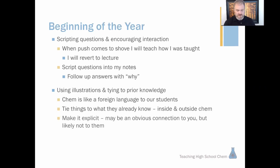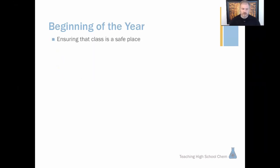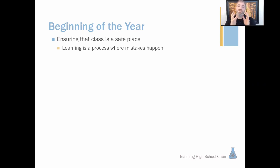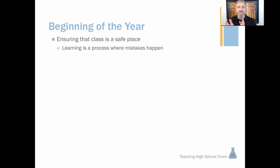We must ensure that our class is a safe space. Learning is a process of going from not knowing to knowing. For some of your brighter students, chemistry may be the first class where that transition isn't quick and easy. They're used to getting it by the end of the period, and all of a sudden they're not there. They start thinking: I failed, I'm stupid, I can't learn this. I've seen it many times, and I tell them: you're not in my class because you already know chemistry — you're in my class because you don't.